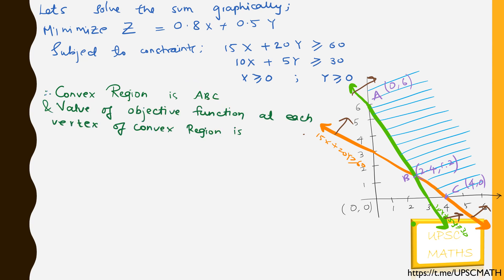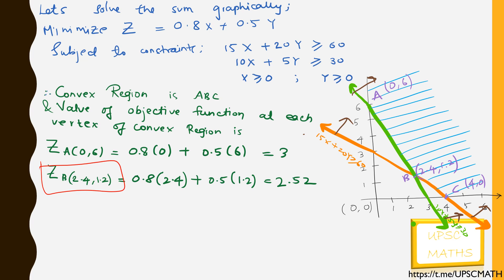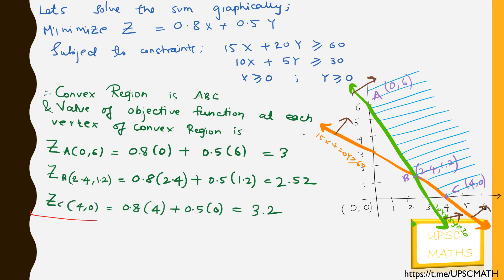Let's now find the value of the objective function at each vertex. The objective function at A is 3, at B is 2.52, and at C is 3.2. Since this is a minimization problem, we select the least value among them, which is 2.52.